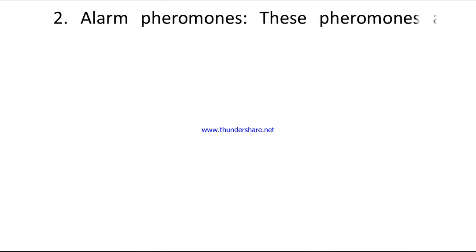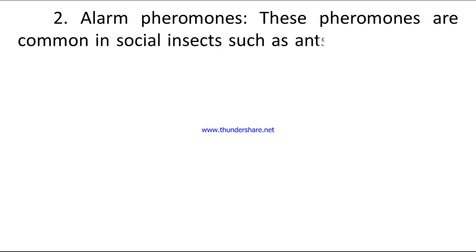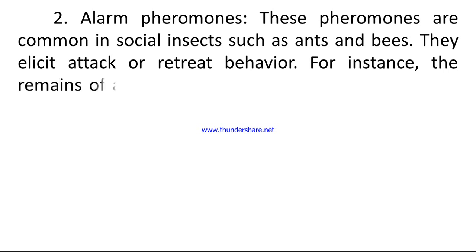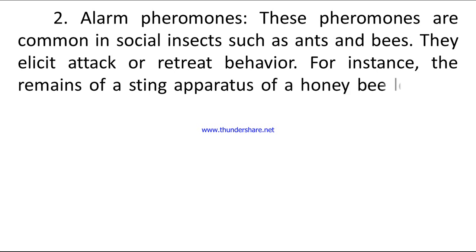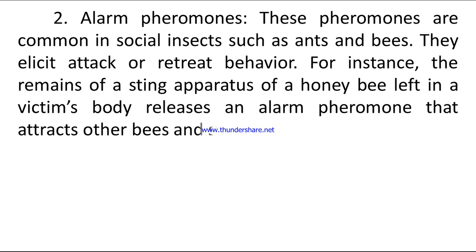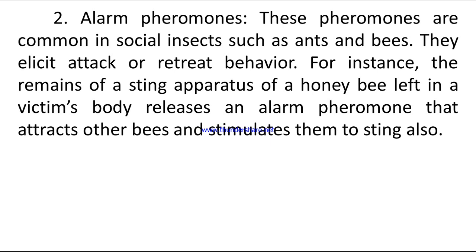Number two: alarm pheromones. These pheromones are common in social insects such as ants and bees. They elicit attack or retreat behavior. For instance, the remains of a sting apparatus of a honeybee left in a victim's body releases an alarm pheromone that attracts other bees and stimulates them to sting as well.